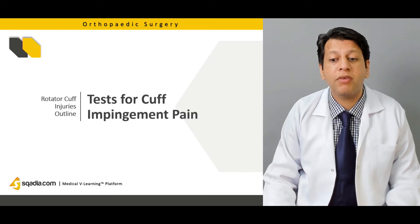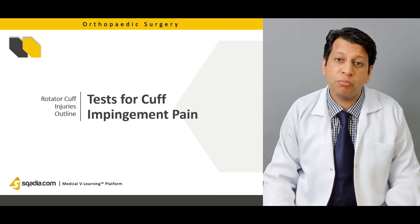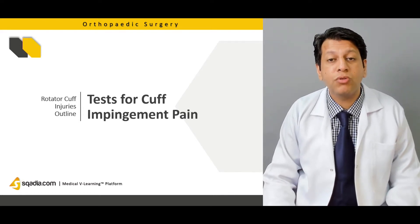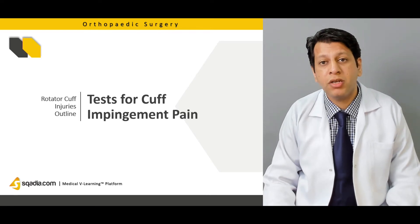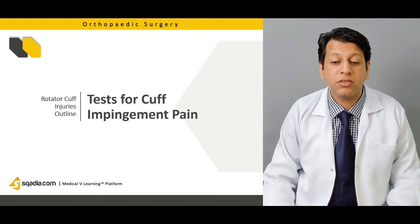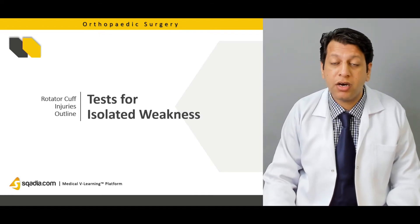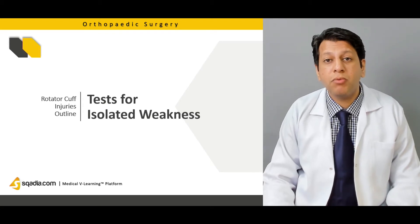We will also be checking what tests are used for cuff impingement pain, assessing whether it is due to internal or external impingement, or due to rotator cuff arthropathy or rotator cuff tear. We will go through the Hawkins-Kennedy test for impingement, and other tests such as Jobe's test for supraspinatus tear or arthropathy, and the empty can test.